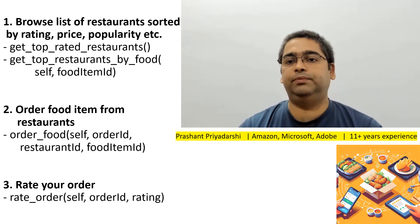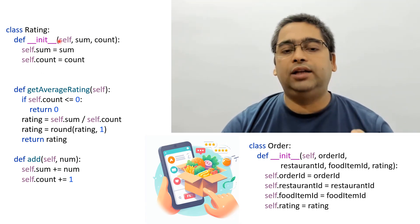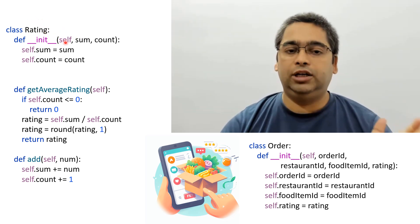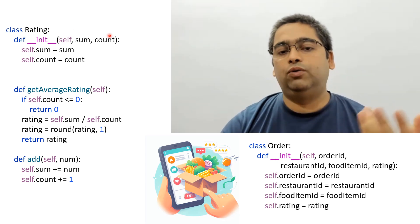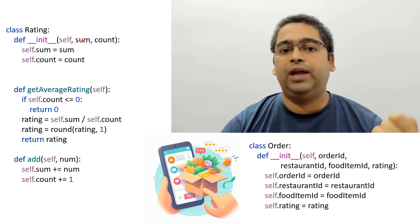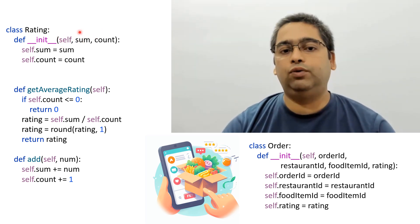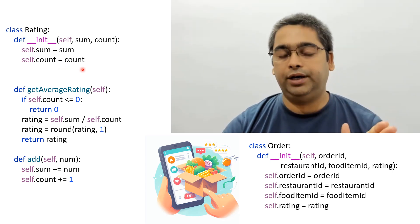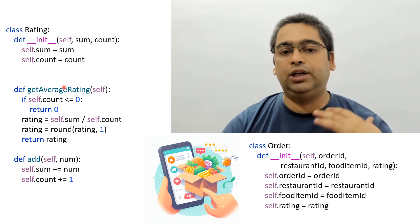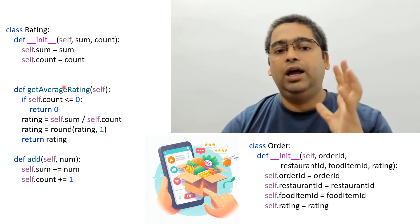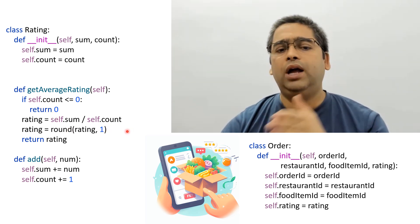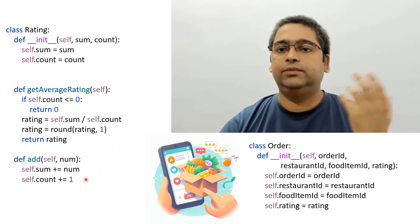Let's start designing the system by listing the entity classes first. The first one is the Order class, since this is a food ordering system — we order a particular food item from a given restaurant and may assign a rating from 1 to 5. We also need a cumulative Rating class that keeps track of all ratings and the number of people who rated, so we can compute the average rating as sum divided by count, rounded to one decimal point.